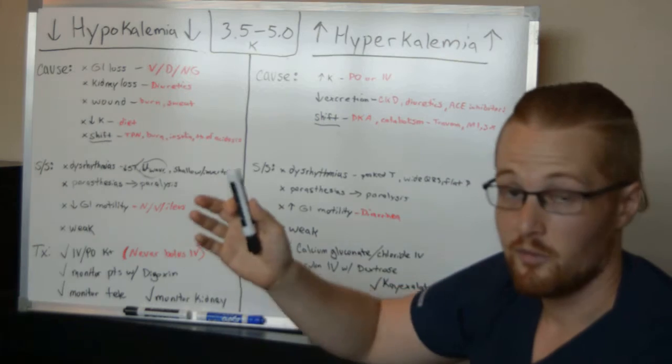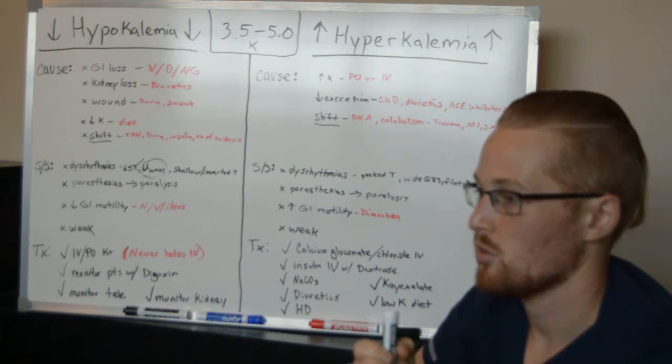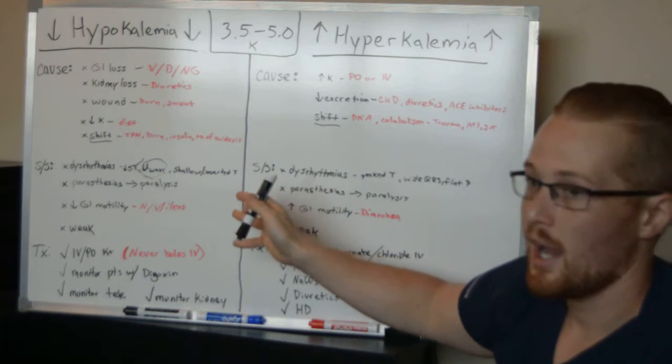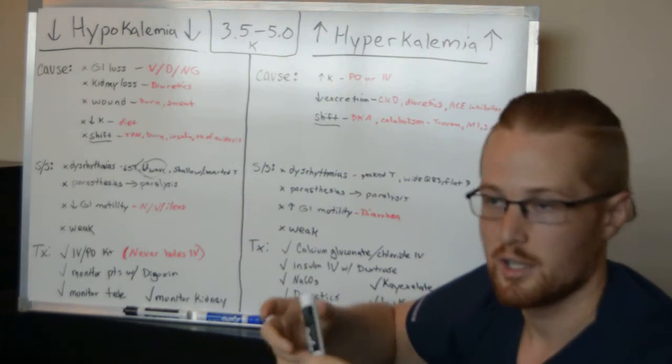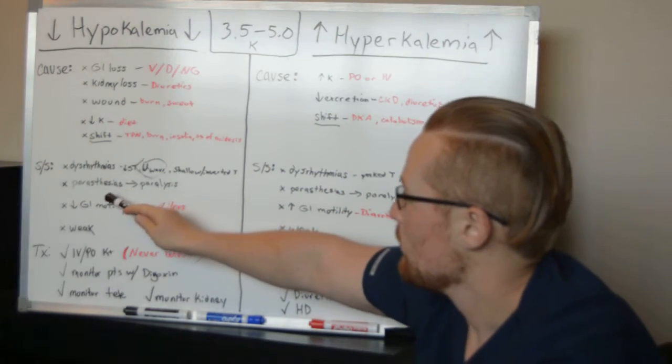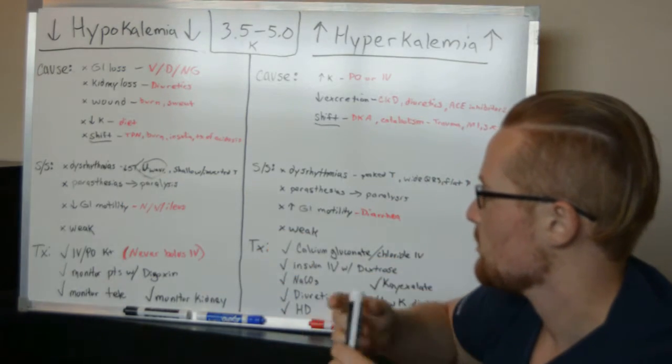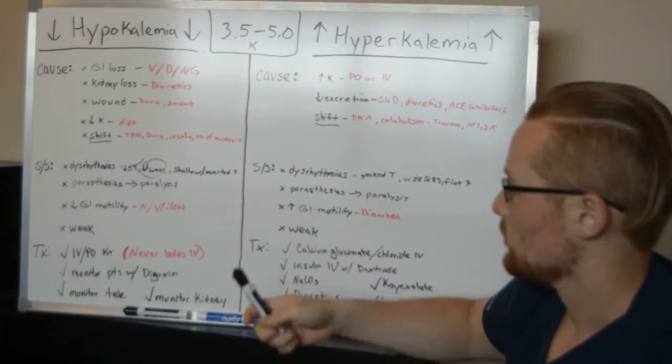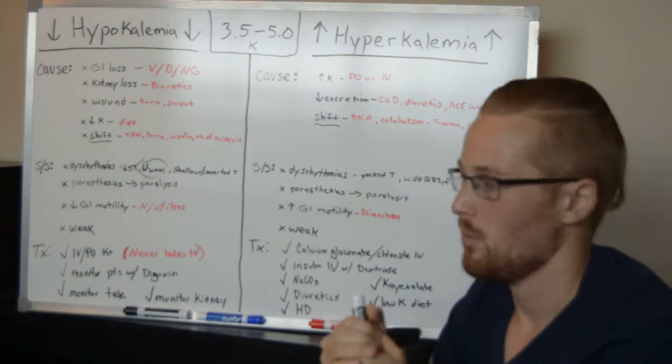Now potassium, very much like salt, also affects skeletal muscles. And so when the levels are off, you're going to have problems with the muscle contractility. And so you'll have, at first, paresthesias, which is the numbness and tingling, and weakness, but it will eventually lead to paralysis, because you're not able to use that sodium-potassium pump effectively.